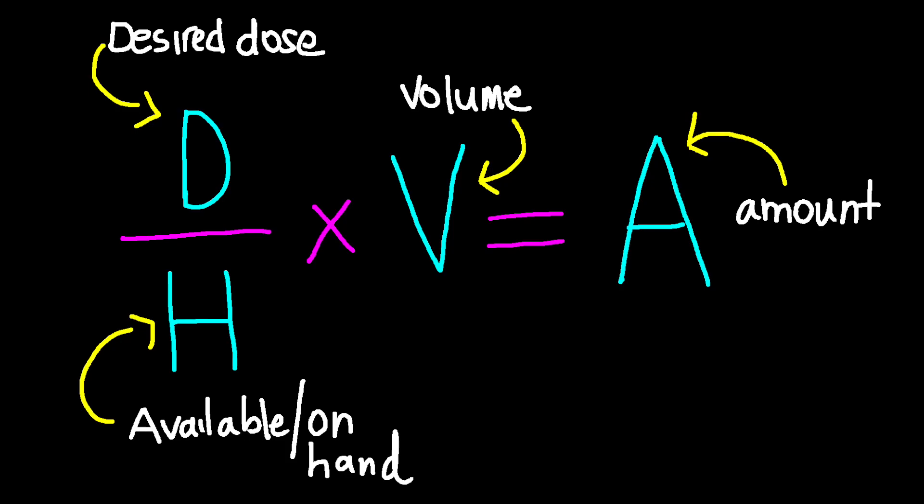To recap: the Desired dose (D) is the order dose requested by the provider. What's on Hand (H) is the dosage of the medication that is currently available.